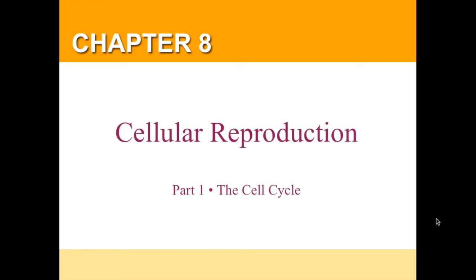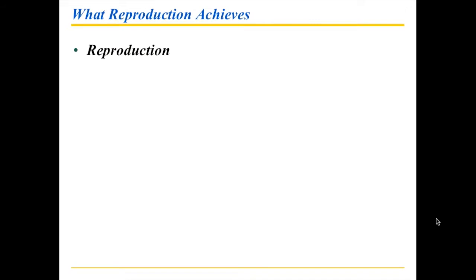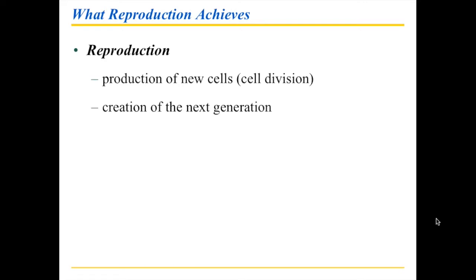Chapter 8 deals with cellular reproduction, and there are a variety of components to this. The first one we need to figure out is the cell cycle. Let's make sure we understand what reproduction actually achieves. One of the things we need to do is produce new cells, and in order to produce new cells, we take existing cells and divide them. The second thing that reproduction achieves is the creation of the next generation.